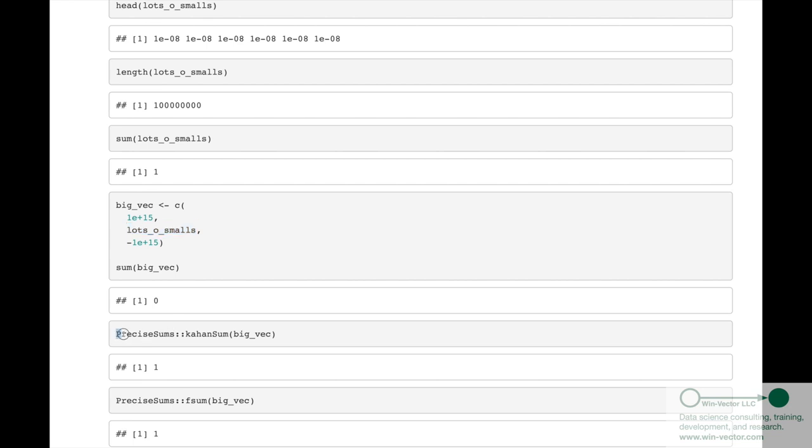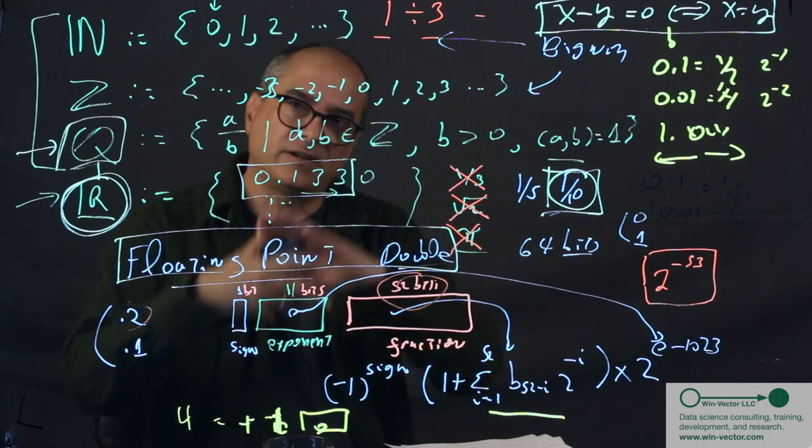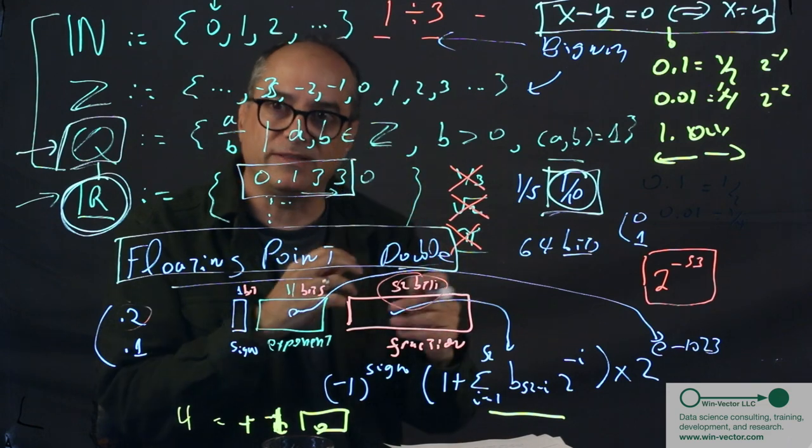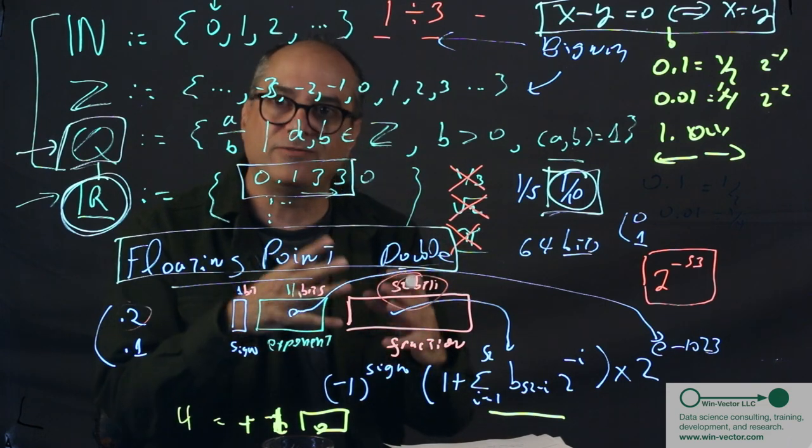Now, we can try a Kahan summing algorithm, and it gets it right. And there's also some more modern algorithms developed by various researchers, which also get it right. And this is from the R package, precise sums. I hope that's helpful to you. Maybe that's a little wrap-up of some of my lectures on number systems and to a practical point that you might appreciate as a data scientist. Thank you very much for your time.